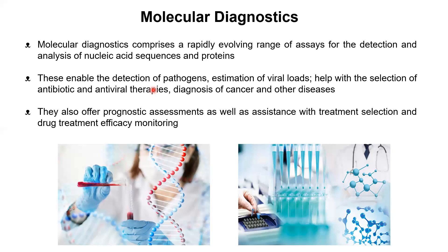You cannot see viruses in a light microscope — you need an electron microscope. The goal is to detect the pathogen or estimate the viral load. Viral load means the total titer of virus, or simply the quantification of viral particles inside the body. This is very important for treatment decisions.